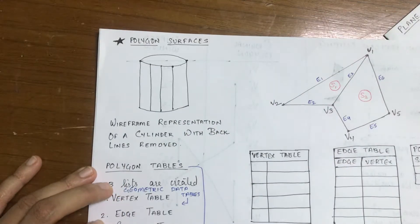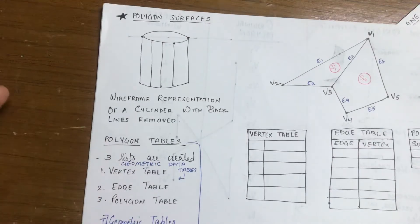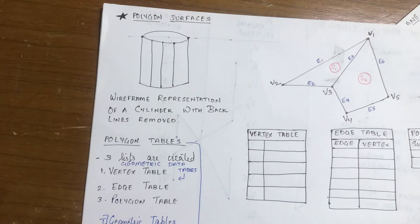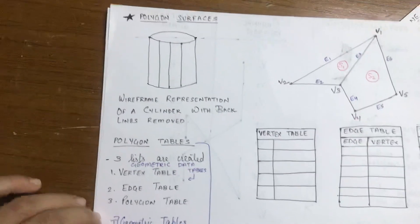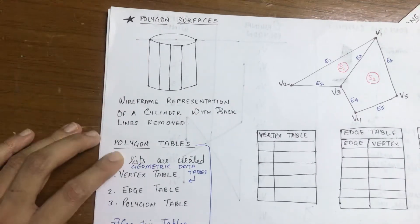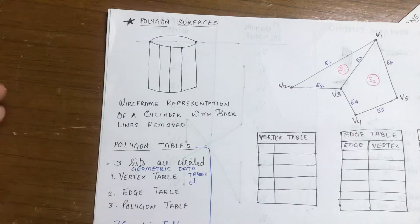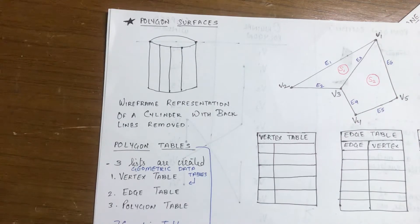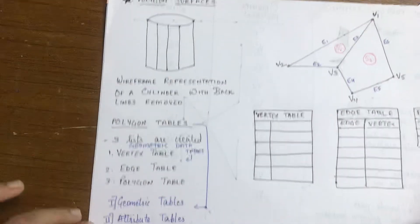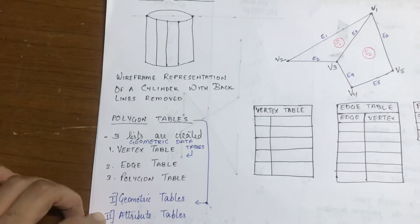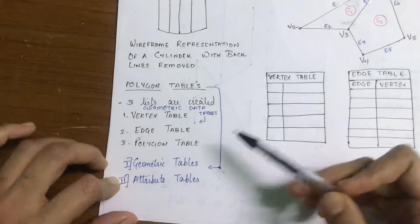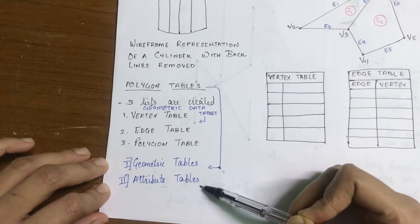In polygon surfaces there are certain concepts to keep in mind. You have to keep in mind how the data is saved in the memory of the computer. In polygon tables for polygon surfaces, the data is stored in the form of polygon tables. We specify a polygon surface with a set of vertex coordinates and associated attribute parameters.